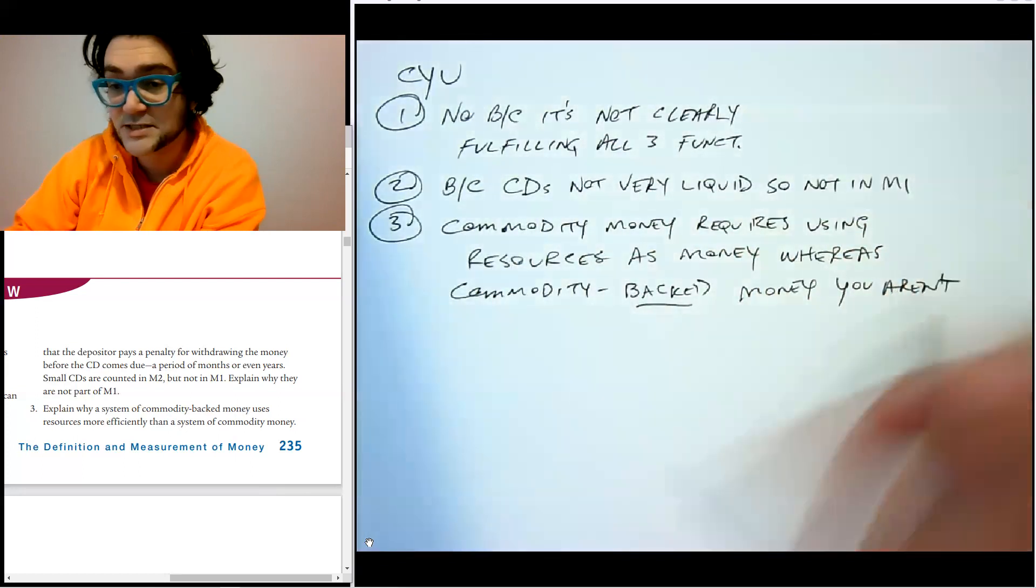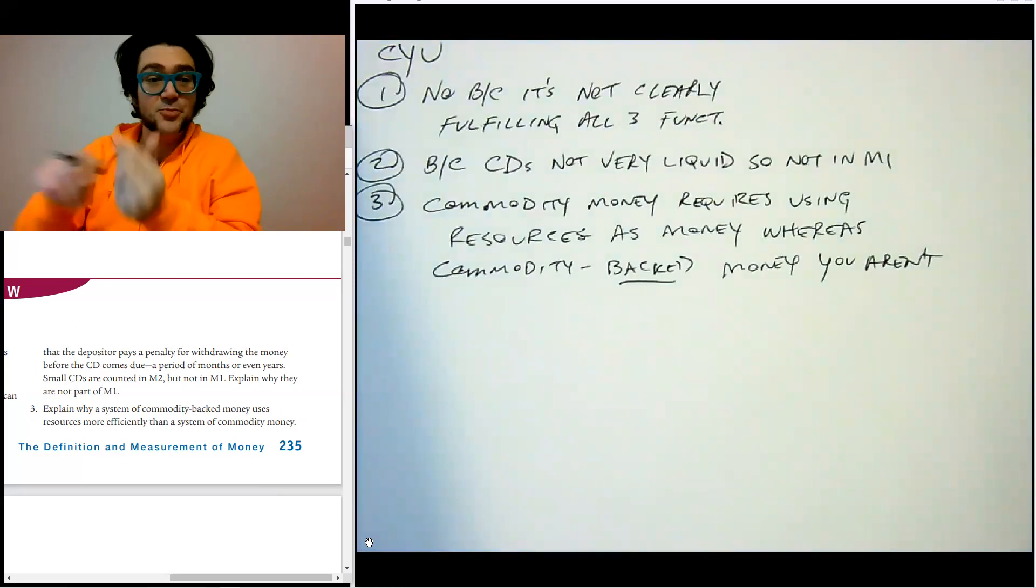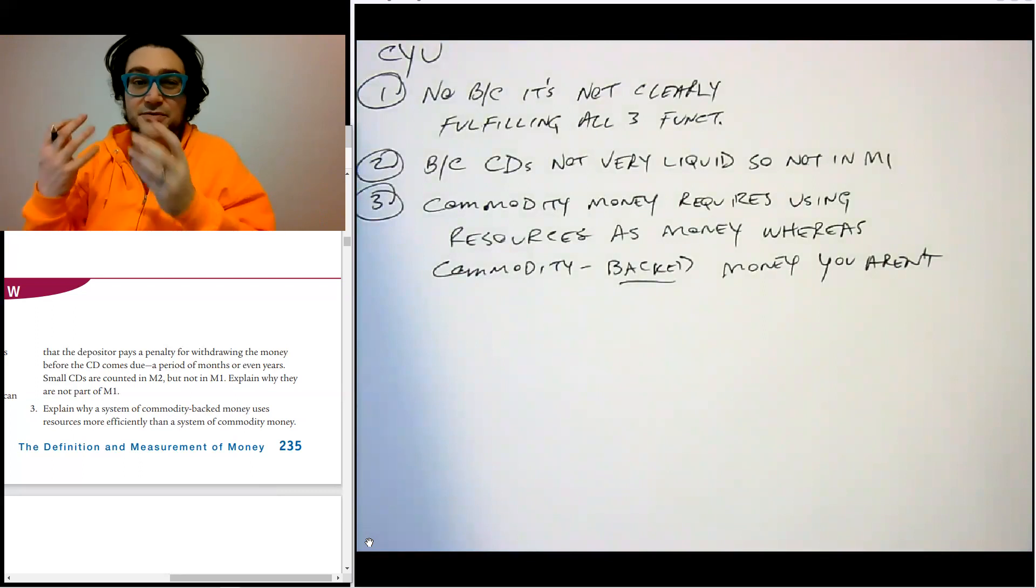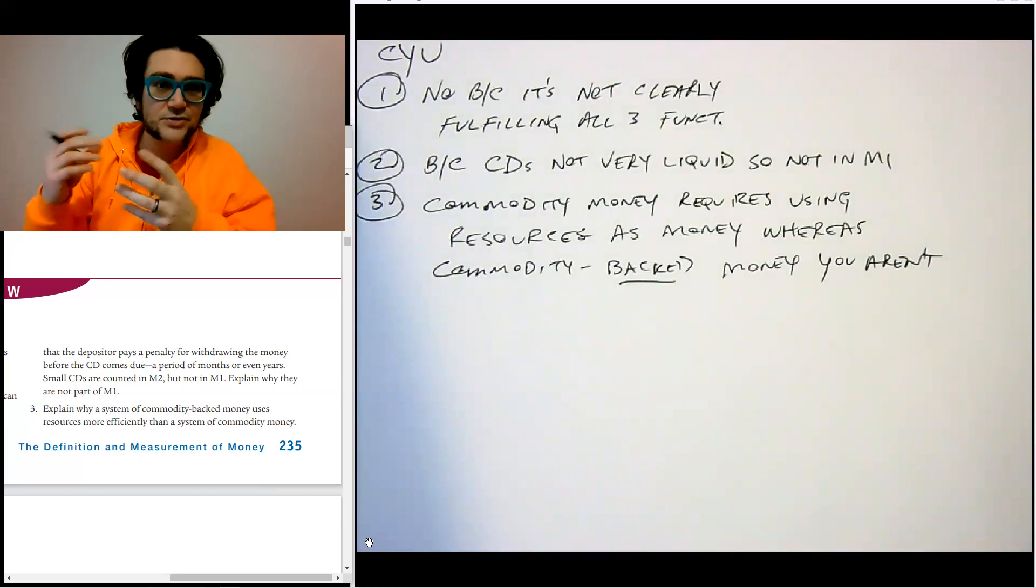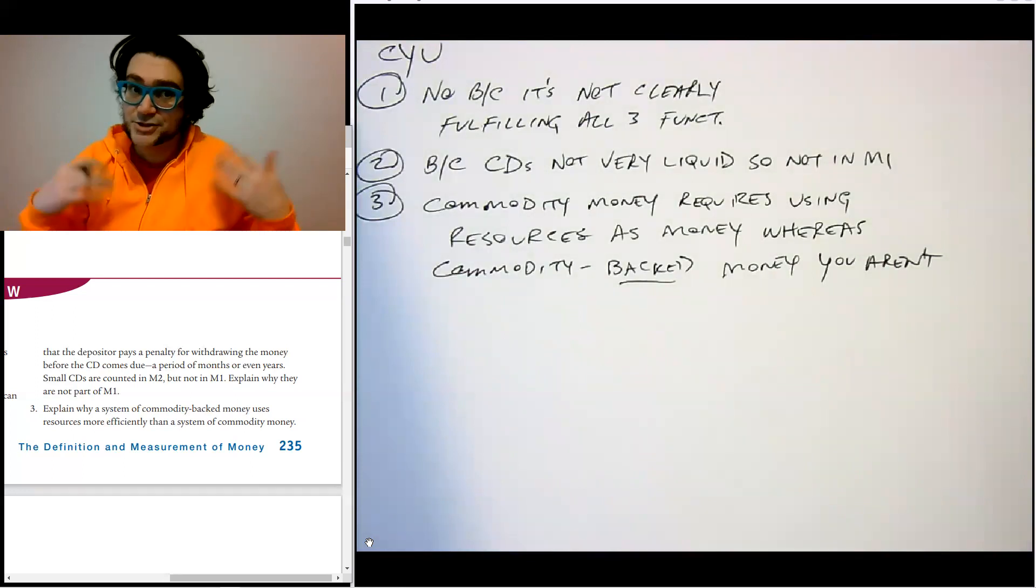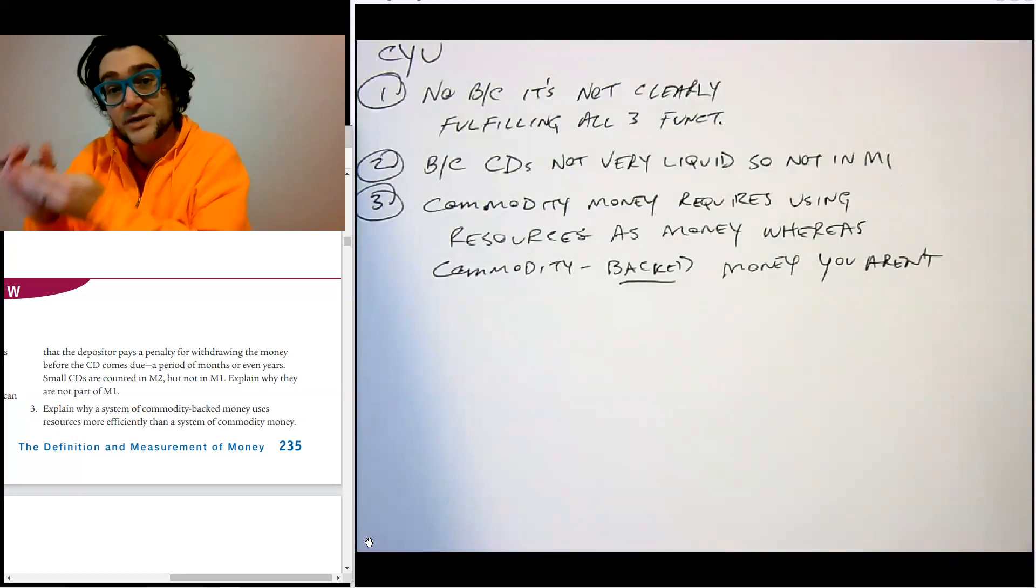Whereas commodity-backed money, you aren't. And the way that commodity-backed money actually is, is you put that resource to work somewhere else, and then you print money based on it. You use paper money basically in exchange for it. And so not everybody's going to all the time want the commodity version. A lot of times people are going to want the pieces of paper. They're easier to travel with, they're easier to use. And so it allows you to manage your money supply a little bit better, and you're not using as many resources.